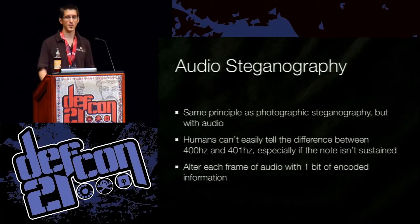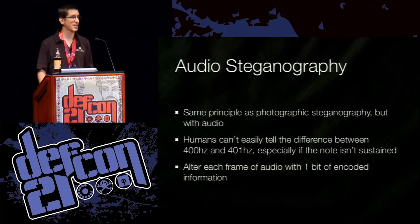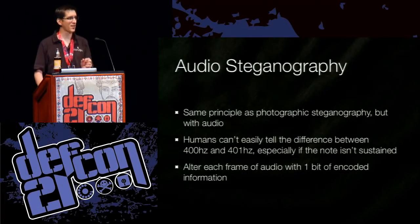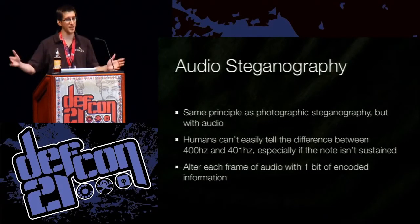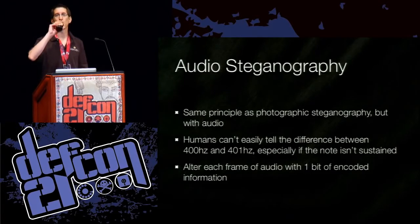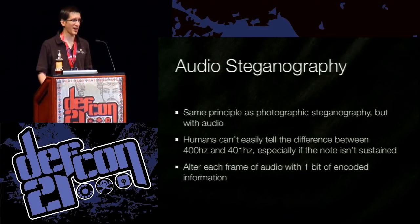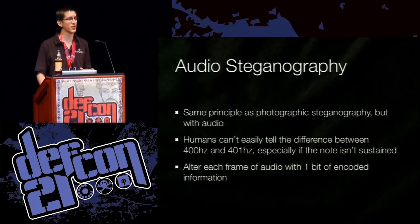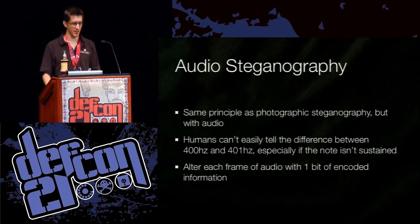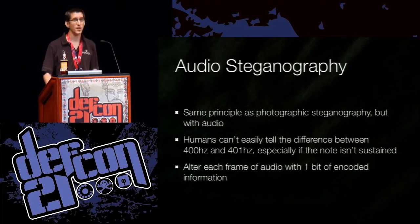Audio steganography is a similar concept, but it uses sound. It's based on the fact that humans can't tell the difference between 400 Hz and 401 Hz, especially if a note isn't sustained for a long time. After each frame of audio, one bit is encoded in that frame. Get enough audio frames, you get enough bits, you get your bytes, and now you've got your message. If you're interested in this, I urge you to look at John Ortiz's work — he's a presenter at Black Hat. His presentations go a lot further into both photographs and audio steganography, using more than just one bit. Some really neat math tricks let you encode a lot more information.